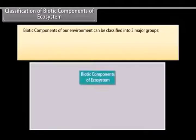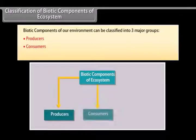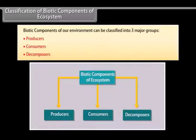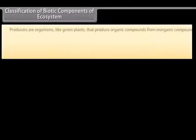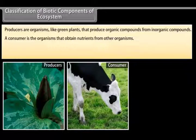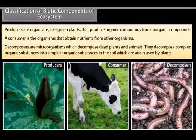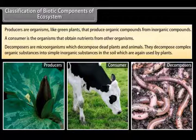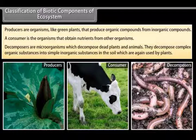Classification of biotic components of ecosystem: Biotic components of our environment can be classified into three major groups — producers, consumers, and decomposers. Producers are organisms like green plants that produce organic compounds from inorganic compounds. A consumer is an organism that obtains nutrients from other organisms. Decomposers are microorganisms which decompose dead plants and animals, breaking down complex organic substances into simple inorganic substances in the soil, which are again used by plants.